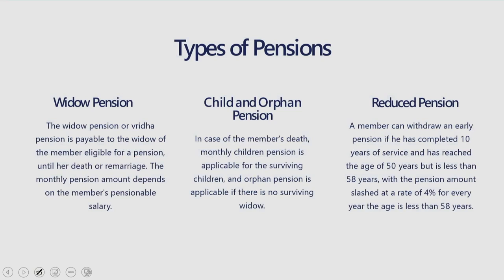For child and orphan pension: in case of the death of a member, monthly children's pension is applicable for surviving children in addition to the monthly widow pension. The monthly pension is paid until the child attains the age of 25 years, at 25% of the widow pension, and can be paid to a maximum of two children. In case the member dies with no surviving widow, his children are entitled to monthly orphan pension of 75% of the widow pension value, applicable to two surviving children from oldest to youngest.